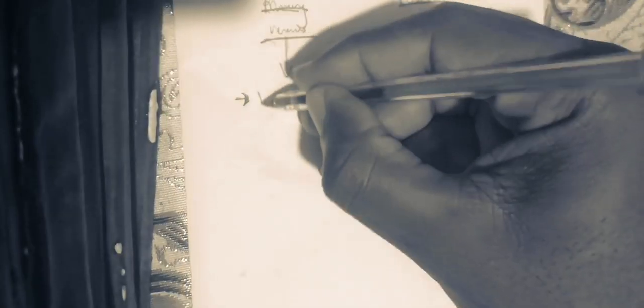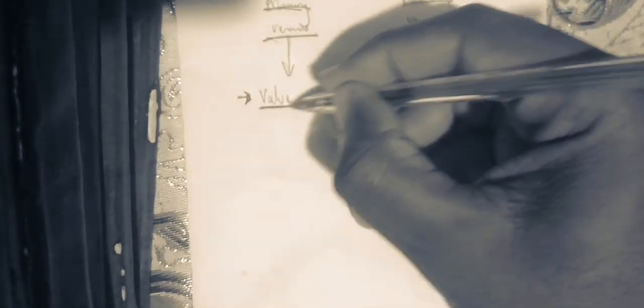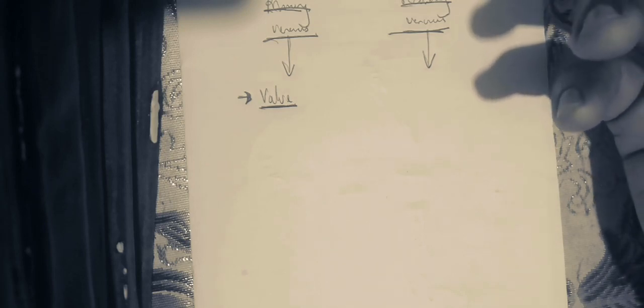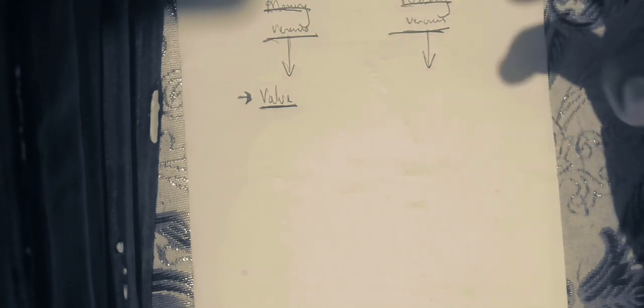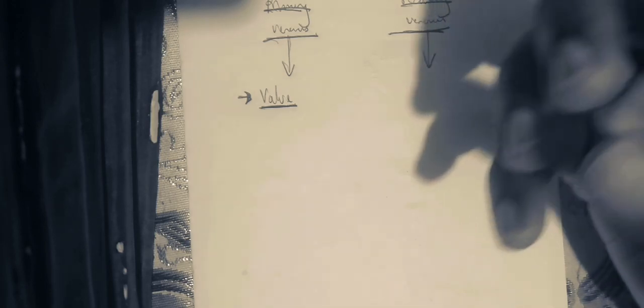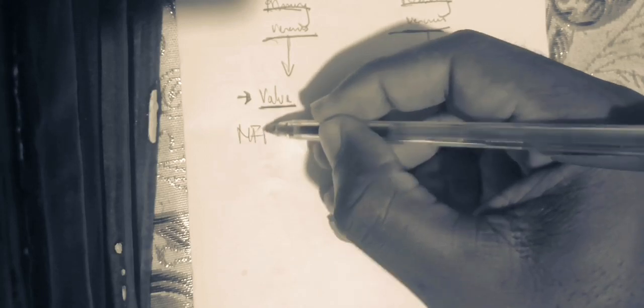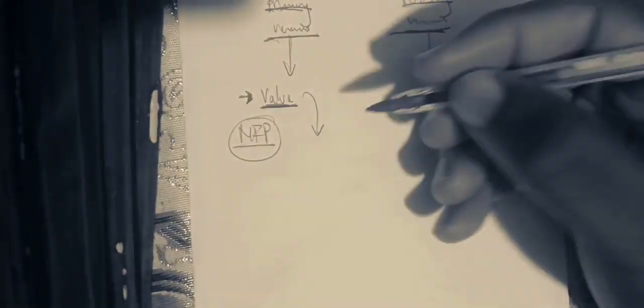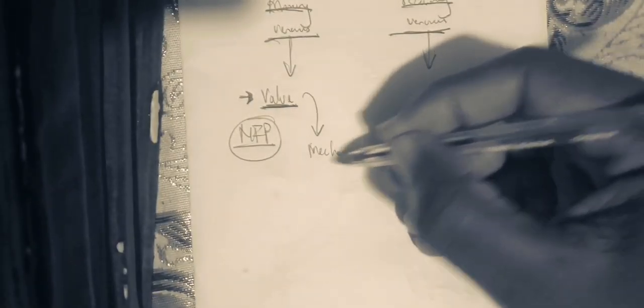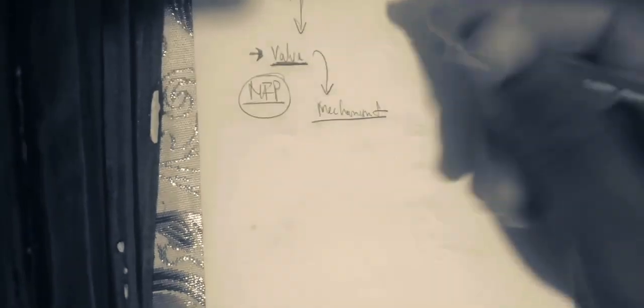In primary venous disorder, the pathogenesis involves an abnormality in the valves of the veins. Normally, the pressure inside the vein is zero because all the pressure from the heart has been overcome in the capillaries in order to cause the net filtration pressure. So there are mechanisms supposed to help promote venous return from the veins into the heart.